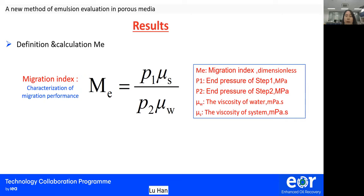Therefore, we define the migration index to quantitatively characterize the migration performance of the emulsion. First, we test the two-sided pressures P1 and P2, and then calculate the pressure P1 multiplied by the viscosity of the system and the pressure P2 multiplied by the viscosity of water. Dividing the two values yields the migration index SME, which is a dimensionless index.